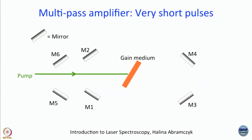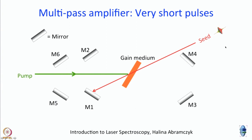To start, you pump the gain medium, and as we have discussed, you will find a lot of excited-state population. Then the chirped output of the stretcher is fed into the gain medium — this is called the seed. In the first pass itself, there will be some amplification because the medium is already pumped.